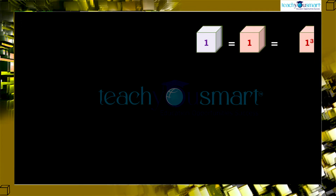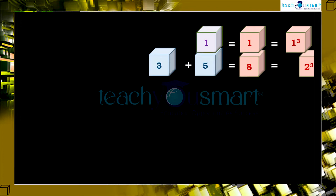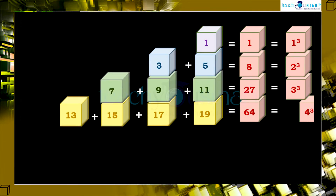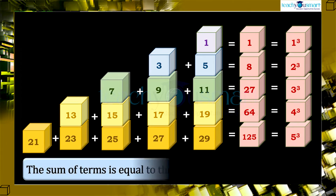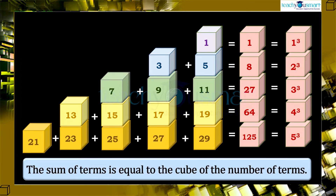Compare the number of terms in each row and their corresponding sums. What did you observe? The sum of terms is equal to the cube of the number of terms. We can express any cube number as the sum of consecutive odd numbers.